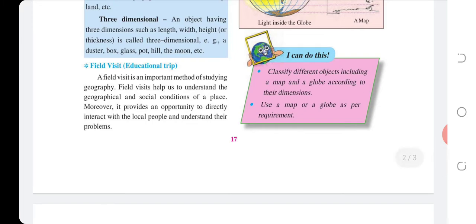I can do this: Classify different objects, including a map and a globe, according to their dimensions. Use a map or a globe as per requirement.